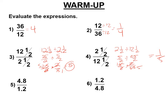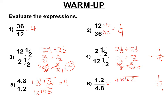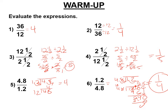Now, 4.8 divided by 1.2. Move the decimal — it's the same as 48 divided by 12, which is 4. So if that's 4, this other one should be 1/4, the reciprocal. Let's check: 1.2 divided by 4.8. We need 48 into 12 — decimal straight up and a zero. 48 into 120 goes twice; working through the long division gives 0.25. And 0.25 equals 1/4.